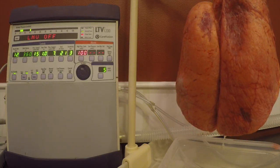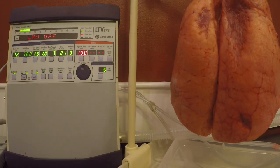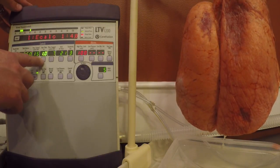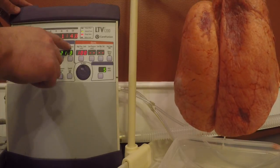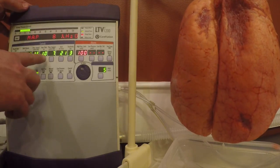In a volume mode of ventilation, our breath is delivered over a certain amount of time based on our inspiratory time. Our inspiratory time is what drives our I:E ratio. You can see that if I push my I time, the I:E ratio pops up and based on a rate of 12, we have an I:E ratio of one to four.